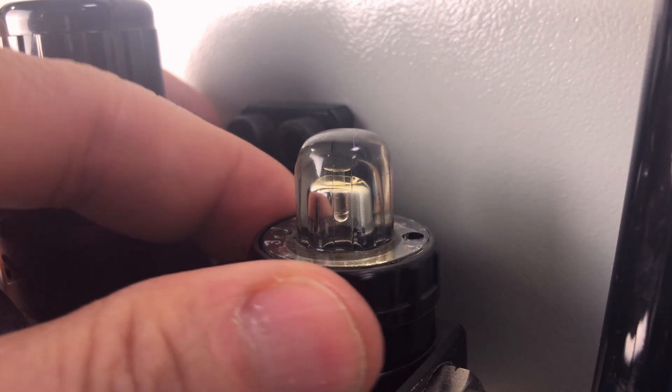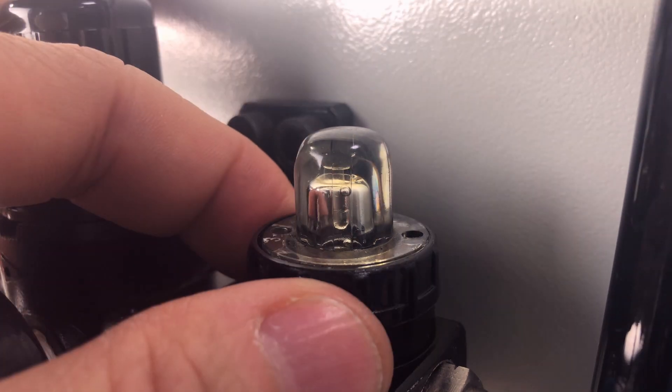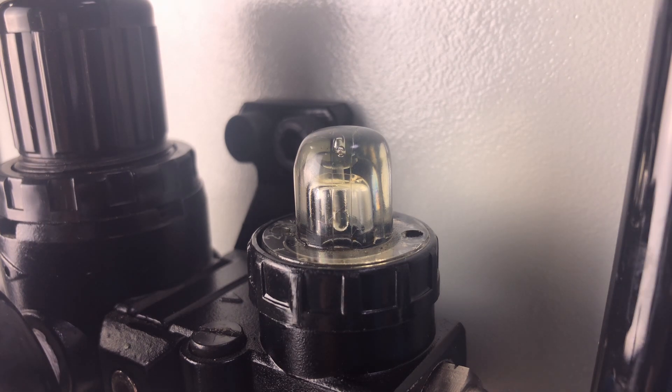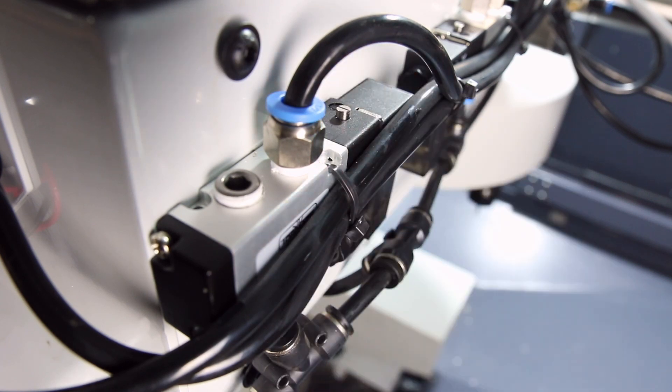Observe the oil dripping in the center of the dome and adjust the knob until the oil is dripping between one and two drips per minute. The FRL oil flow will then be set correctly and you can release the solenoid button.